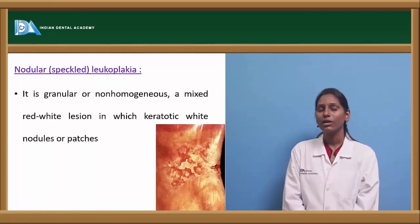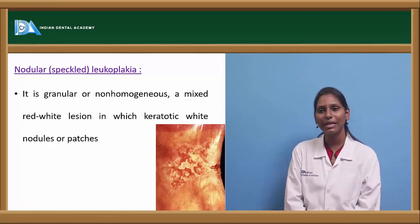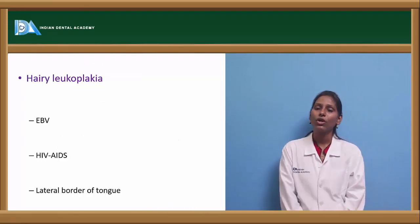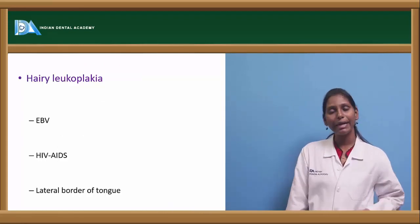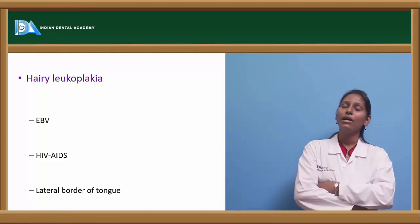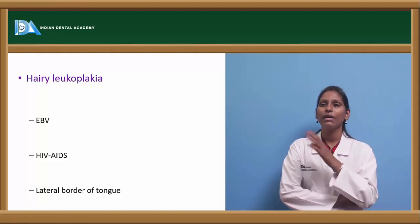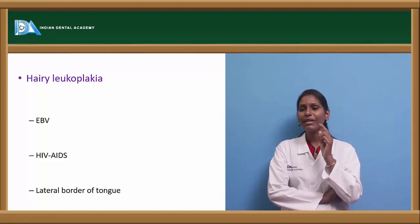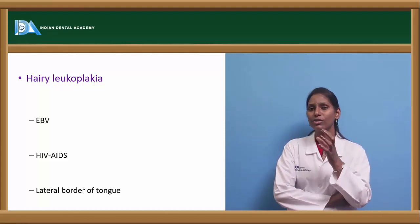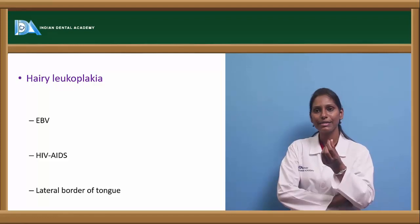Next is nodular or speckled leukoplakia — it is granular and non-homogeneous, mixed with a red lesion, where keratotic white nodules or patches are seen mixed with red areas. And hairy leukoplakia is usually associated with HIV/AIDS, most commonly caused by Epstein-Barr virus. Hairy leukoplakia can actually be seen on the lateral borders of the tongue — a slightly elevated patch with wrinkling surfaces.